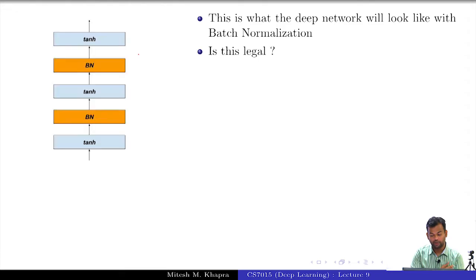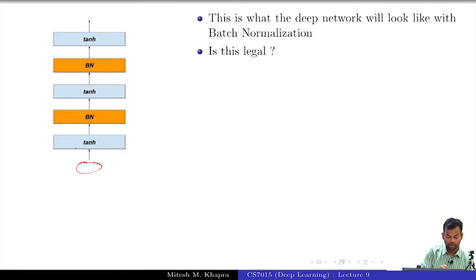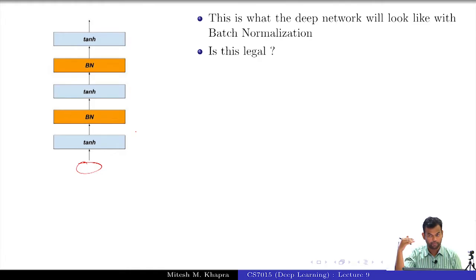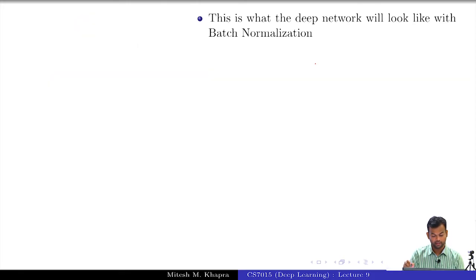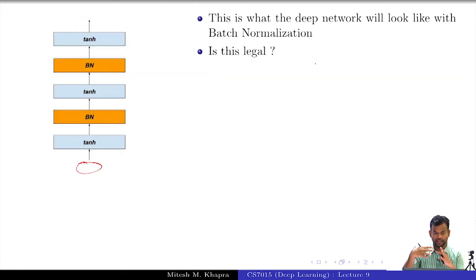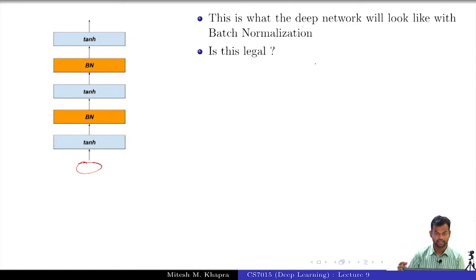This is what a deep network will look like with batch normalization. You pass an input, compute the tanh, and then you have this batch normalization layer performing the normalization operation. It gives you an input coming from a zero mean unit variance distribution, and then you pass it to the next layer, which again has a batch normalization layer. So after every layer you actually add a batch normalization layer.